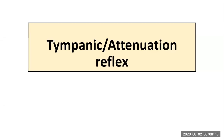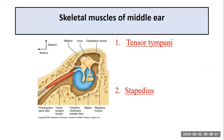Hello students. In this video we will talk about the tympanic or the attenuation reflex. The attenuation reflex is also called the tympanic or the acoustic reflex, and it is a preventive or protective reflex which reduces the sound pressure amplitude by affecting the mobility of the auditory ossicles.